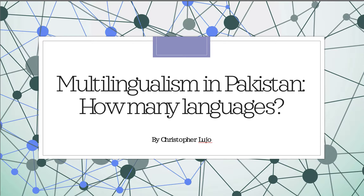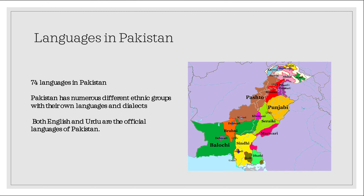How many languages? I first want to talk about a few facts regarding Pakistani language. There are, in fact, a huge variety of languages, totaling over 74 languages in Pakistan, with the majority being native and indigenous to Pakistan itself. One of the main reasons why there are so many languages in Pakistan is due to the many diverse ethnic groups located within the Pakistani borders, each with their own traditional language and dialects that accompany them.